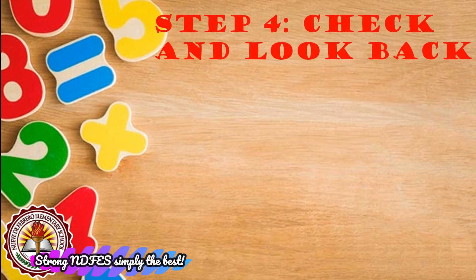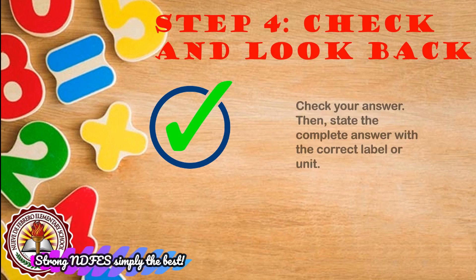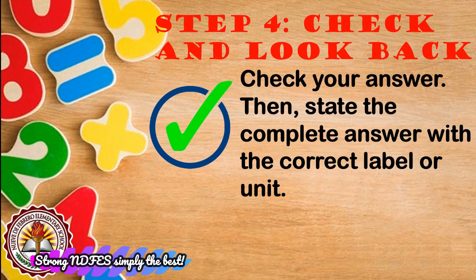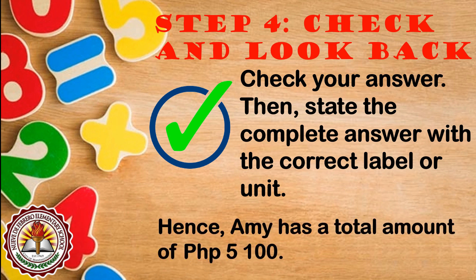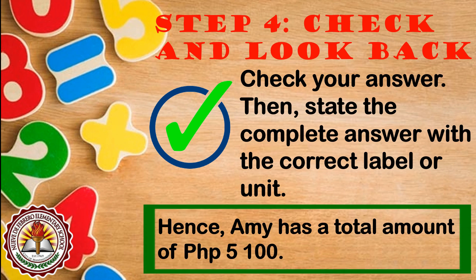Step 4: Check and Look Back. After solving the equation, check your answer, then state the complete answer with the correct label. Therefore, Ami has a total amount of 5,100 pesos.